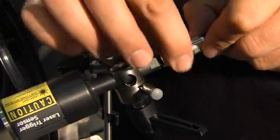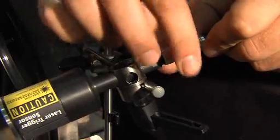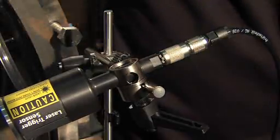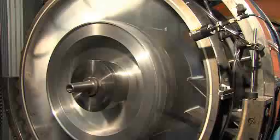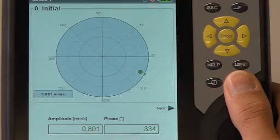The reference sensor is attached to measure the speed and the angular position of the unbalance. The balancing procedure starts with the calibration of the smart balancer. The first run is the initial run in the rotor's current state.